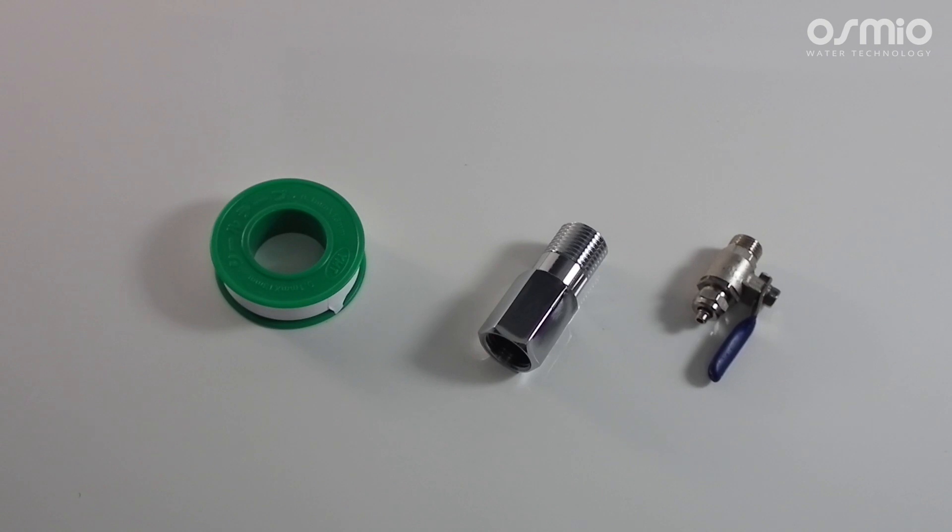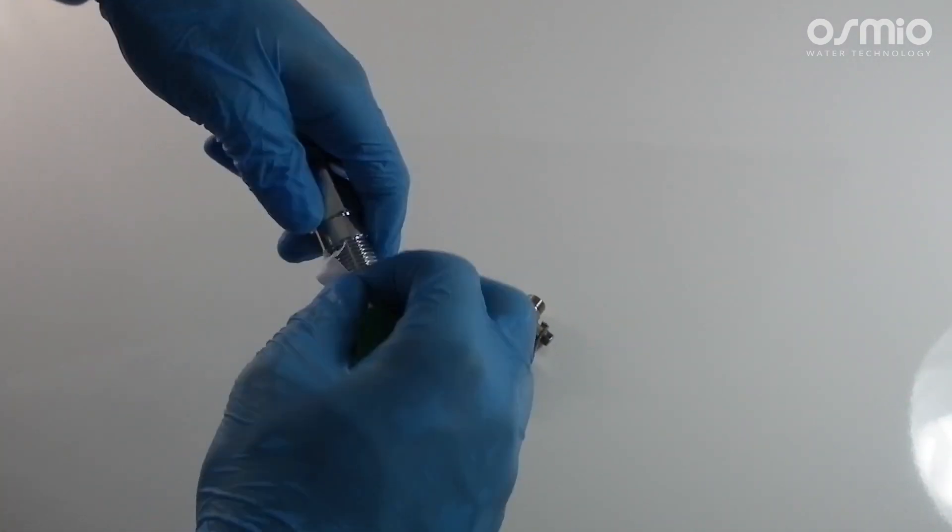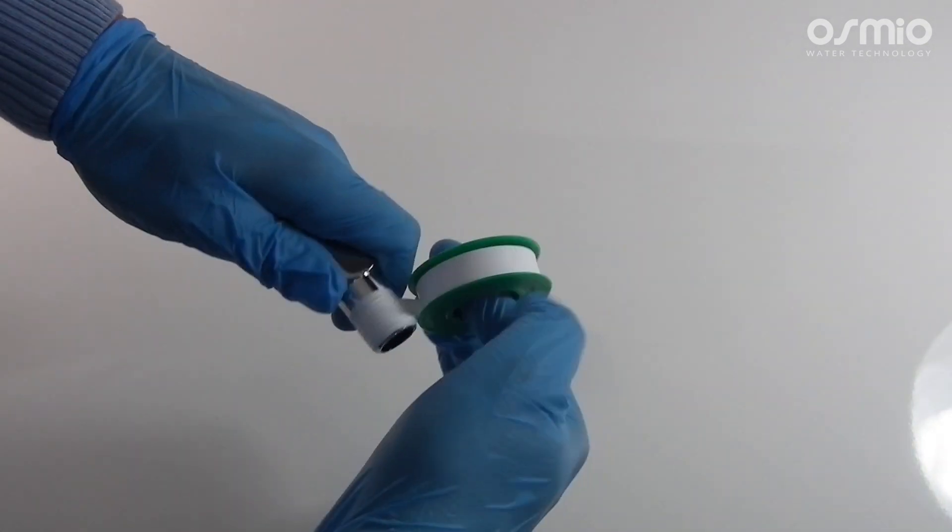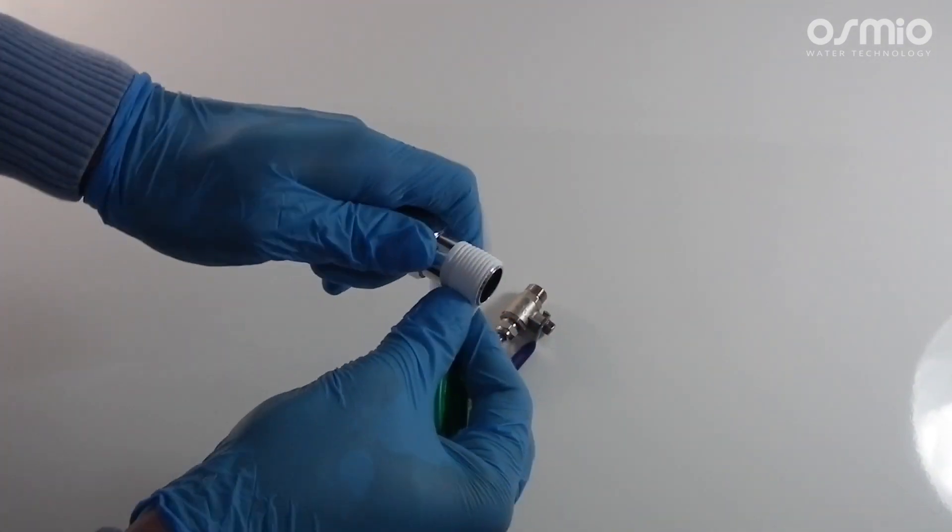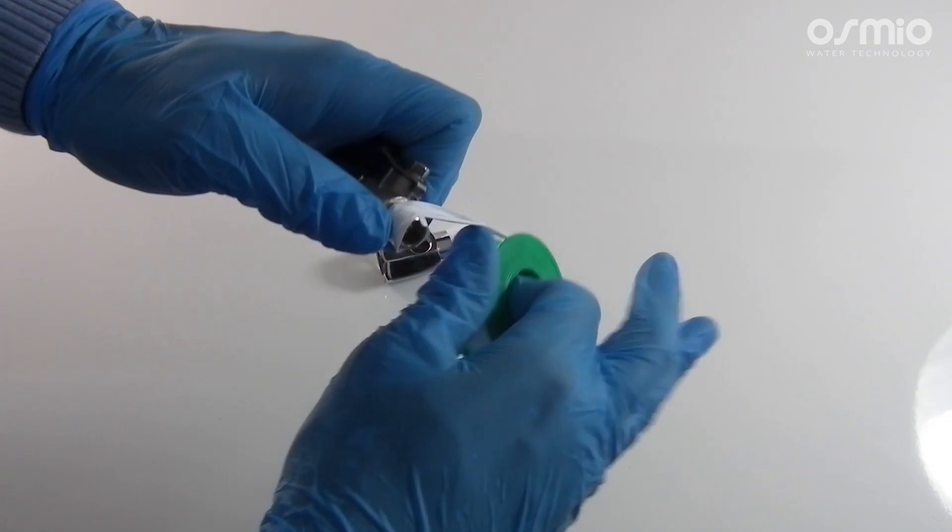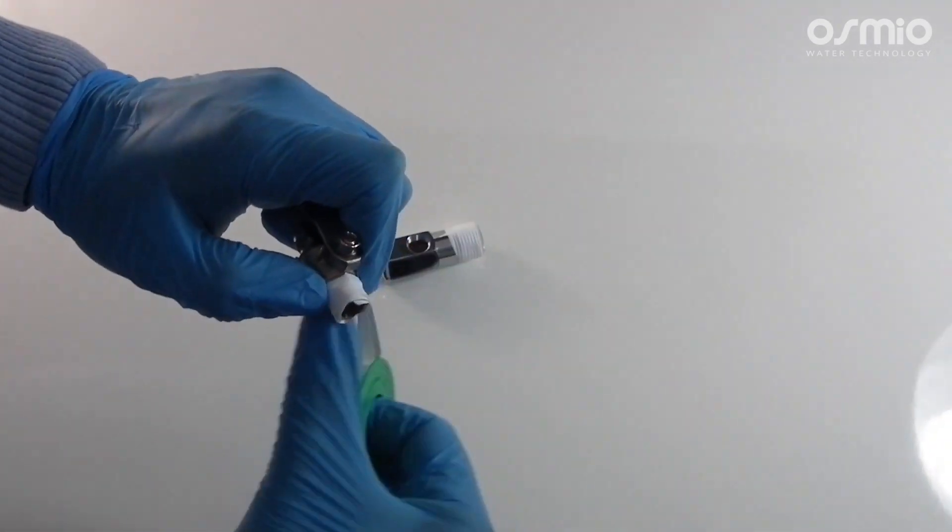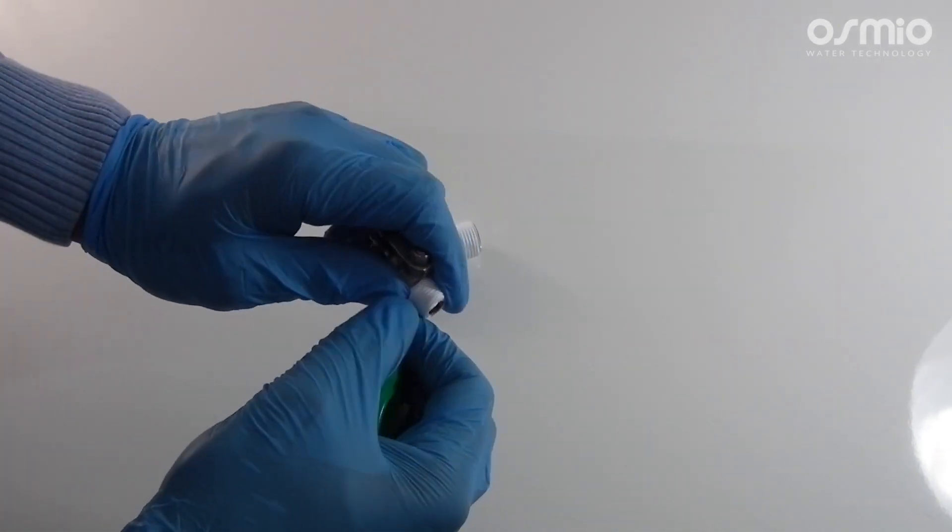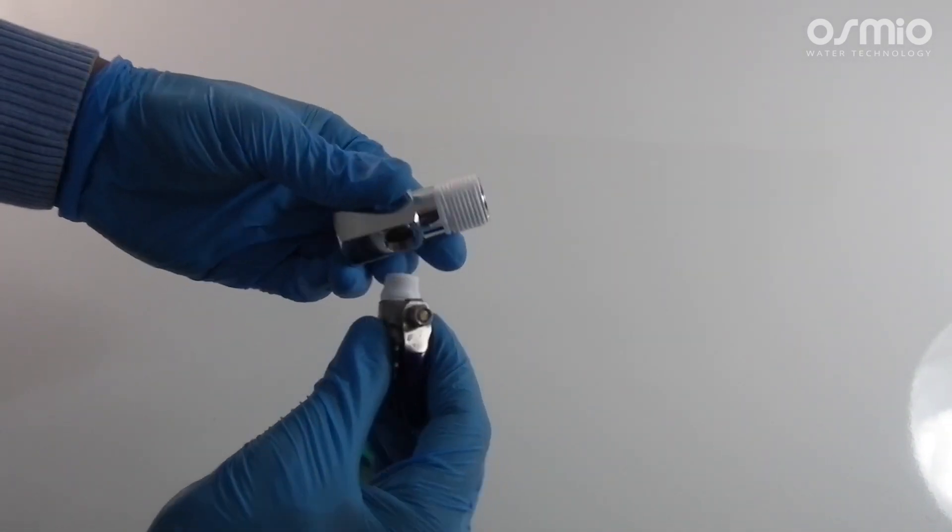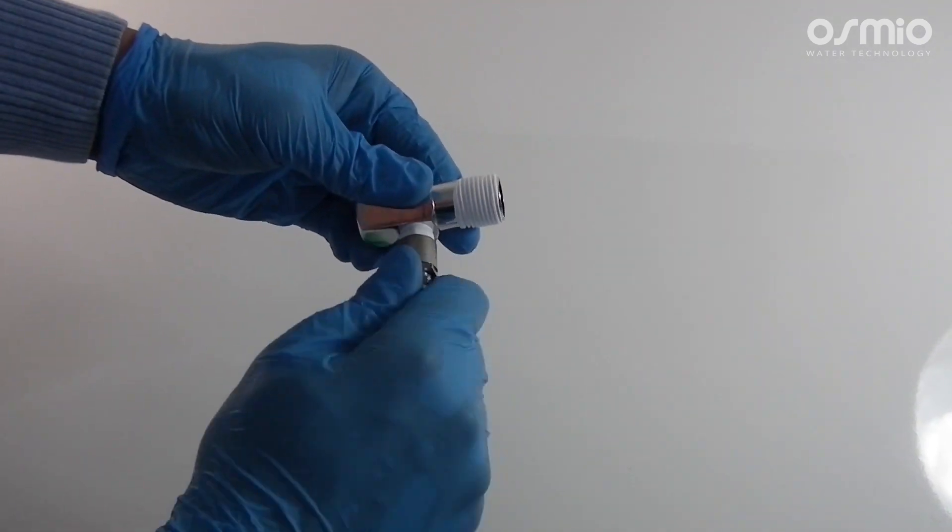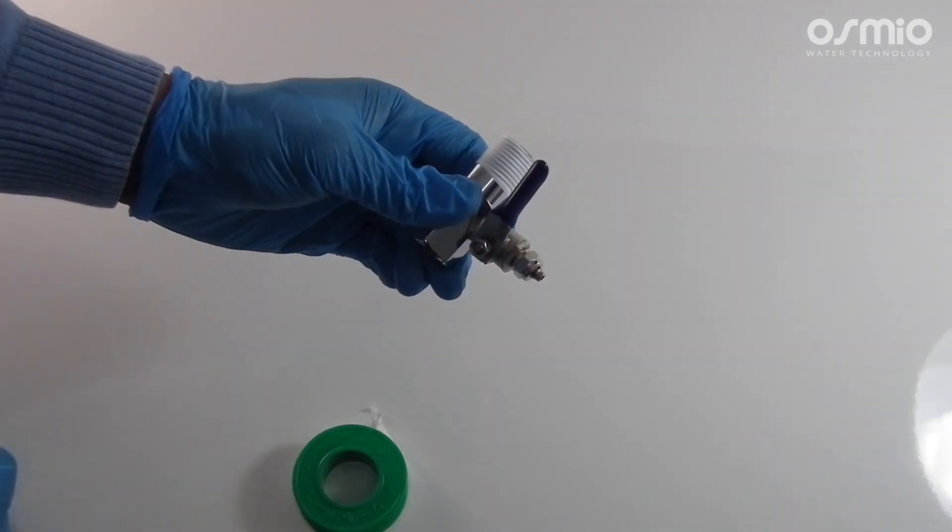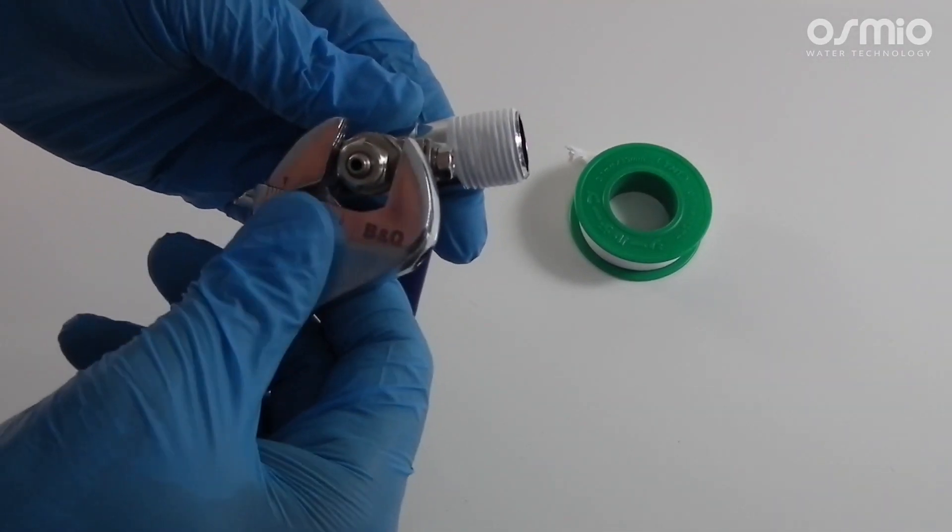Apply PTFE tape around the diverter valve male thread connection side, and the same for the metal ball valve. After that, screw the ball valve into the diverter valve and make a full tightening with a spanner.